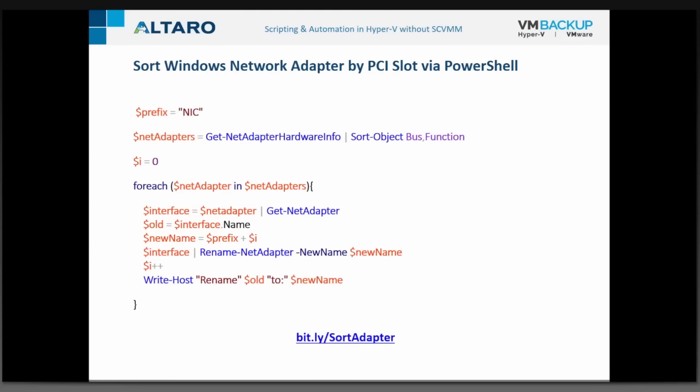Another example for setting up a Hyper-V host: when you have multiple network adapters, their names and order can vary. There's a new Consistent Device Naming feature, but if your hardware doesn't support it, you can sort adapters by bus ID and function ID using Get-NetAdapterHardwareInfo and Sort-Object. Then assign a consistent prefix — like 'NIC' — and use a foreach loop with a counter to rename them in a predictable, repeatable order.